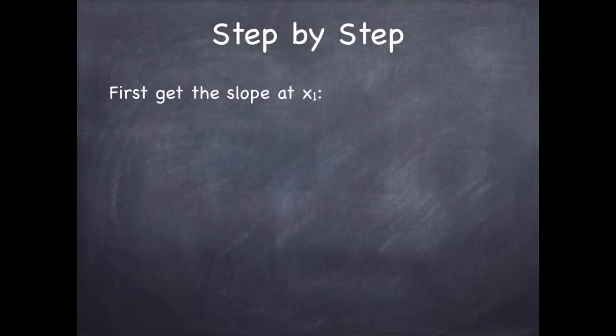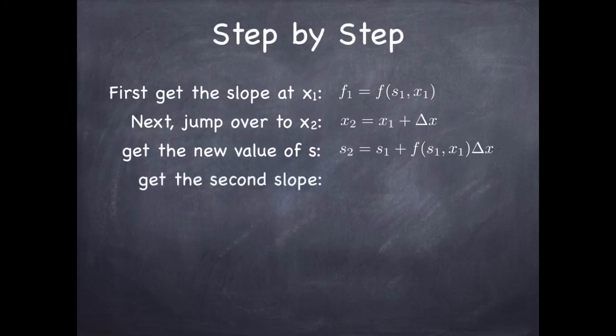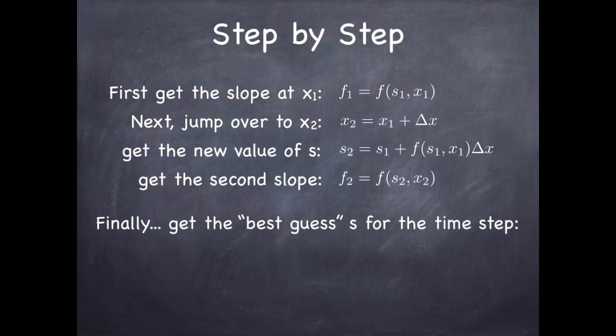So let's take that step by step. First we get the slope at x1. We'll call that f1. Then we jump over to x2 and we evaluate the slope at x2. s2 is s1 plus the slope evaluated at x1 times delta x. Then we get the slope at that point. We evaluate the slope at point x1 plus delta x and we call that f2. Then we get the best guess for the intermediate slope. That's the average of f1 and f2. We multiply that by delta x and we add that to s1. That becomes s3, which is our new guess at the state at x1 plus delta x.